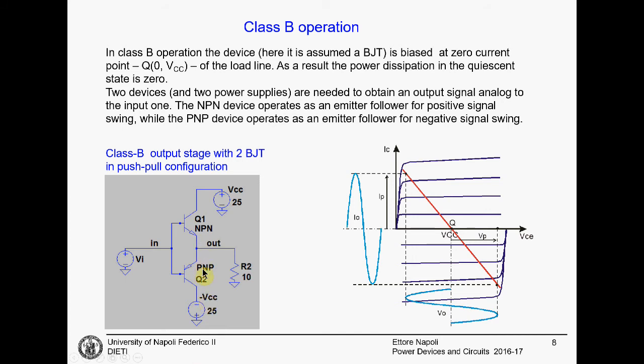And this circuit is much more efficient than Class A because when the input is zero, it is not dissipating any power. It will dissipate only when some input signal arrives.